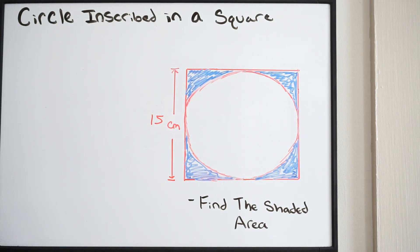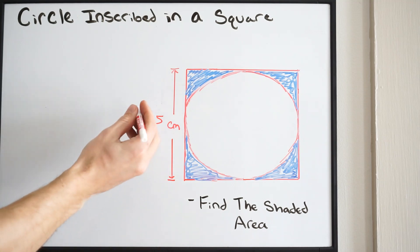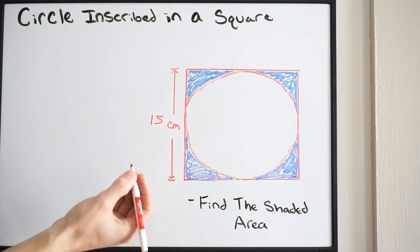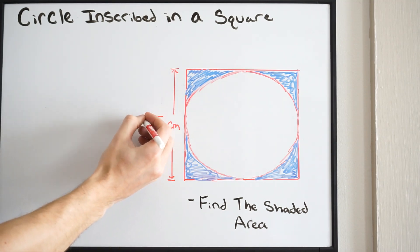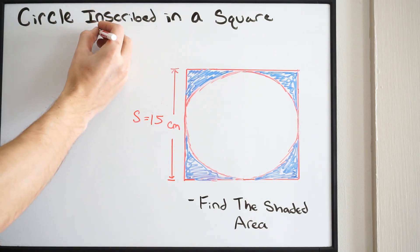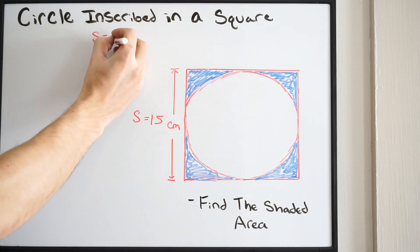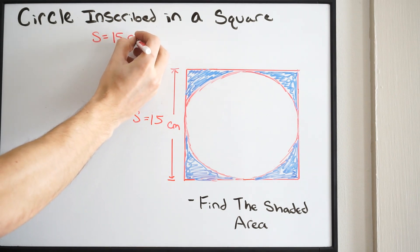To solve this problem, we're going to have to find both the area of the square and the circle. Looking at what we're given, we can see that the side length of this square is going to be 15 centimeters. So I'm just going to label this as S, our side length. So S is equal to 15 centimeters.